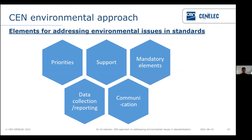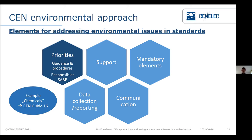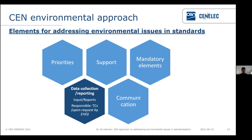This is done by defining five elements. The first is about priorities and the setting of priorities. SABE is responsible for setting these priorities, and the approach gives guidance on how SABE should do it. One example of a past priority was chemicals, which led to the publication of CEN Guide 16 on addressing chemicals in consumer product standards. Another priority was circular economy, which led to a topic group where many TCs working on circular economy are represented and coordinate their work.